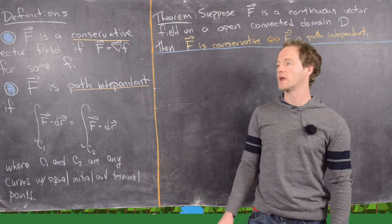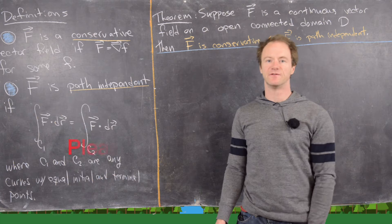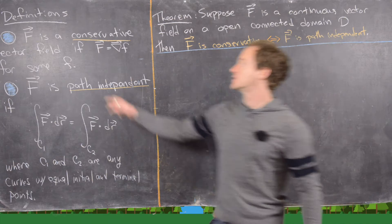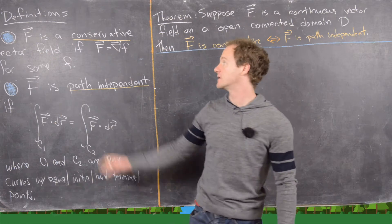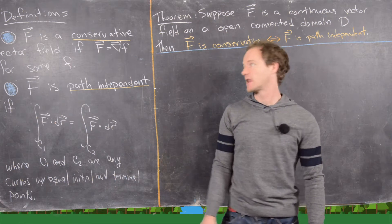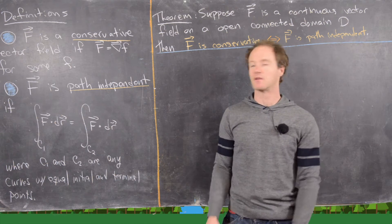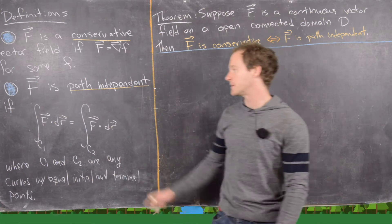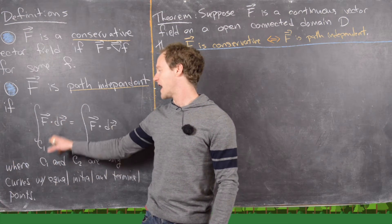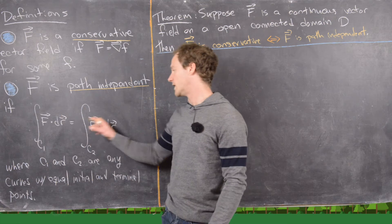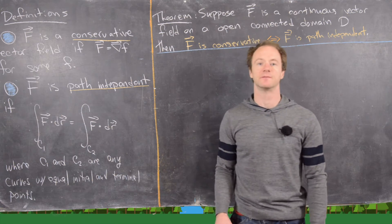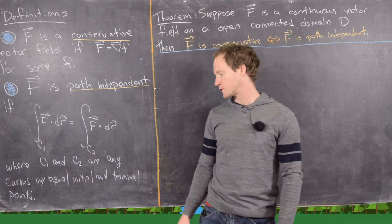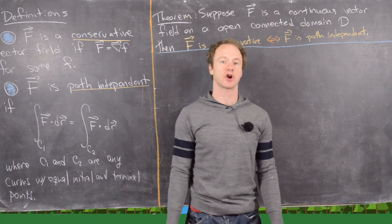In this video we're going to prove an important equivalence involving conservative vector fields and path independent vector fields. We say that F is a conservative vector field if F equals the gradient of little f, where little f is some scalar multivariable function. We say that F is path independent if the line integral of F over curve C1 equals the line integral of F over curve C2, where C1 and C2 are any two curves with equal initial and terminal points.